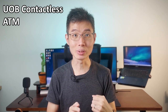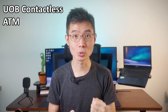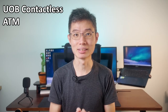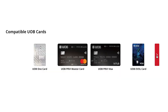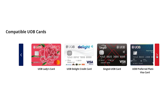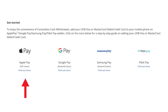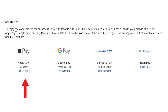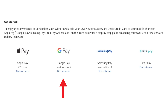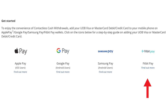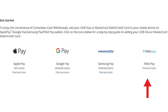Second method: UOB contactless ATM. For this, you will need to first add your UOB debit or credit card to a mobile wallet. Take note, not all UOB cards support contactless ATM, but it will still work for the most common UOB cards, like the UOB One card, UOB Privilege Master card, UOB latest card and so on. As for mobile wallets, if you are using iOS devices like iPhone or Apple Watch, you can add the UOB card to Apple Pay. If you are using Android phones, you can add the card to Google Pay or Samsung Pay. Or if you are using a Fitbit Watch, you can also add the card to Fitbit Pay.